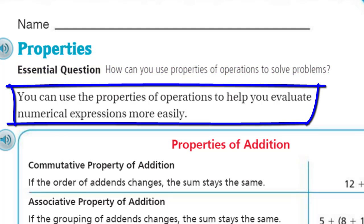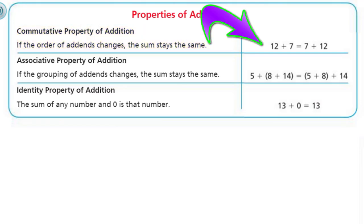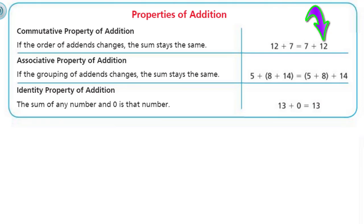You can use the properties of operations to help you evaluate numerical expressions more easily. Let's look at some of these. First, we have the properties of addition. The commutative property of addition states: if the order of addends changes, the sum stays the same. For example, 12 plus 7 equals 7 plus 12. Addends are just those numbers we add together to give us a sum. The 12 is an addend, the 7 is an addend, and when they're reversed, the sum is still the same. That's the commutative property of addition.